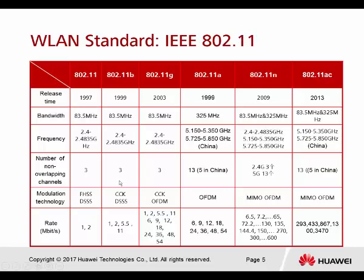Regarding modulation technology: 802.11 uses FHSS and DSSS. 802.11B uses CCK and DSSS. 802.11G can support OFDM, which is the reason why B and G can support rates up to 54 Mbps. 802.11N supports OFDM and also MIMO technology, allowing 802.11N to easily reach up to 300 Mbps. The table shows all the different rates supported by all the versions.